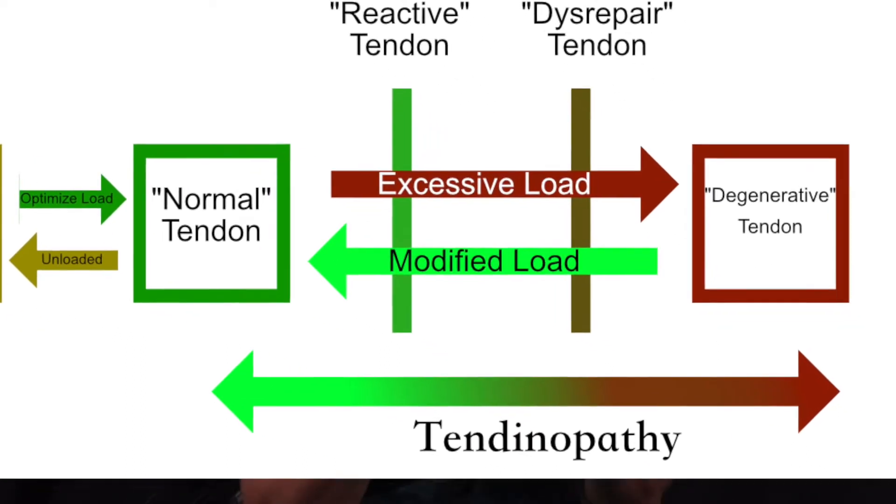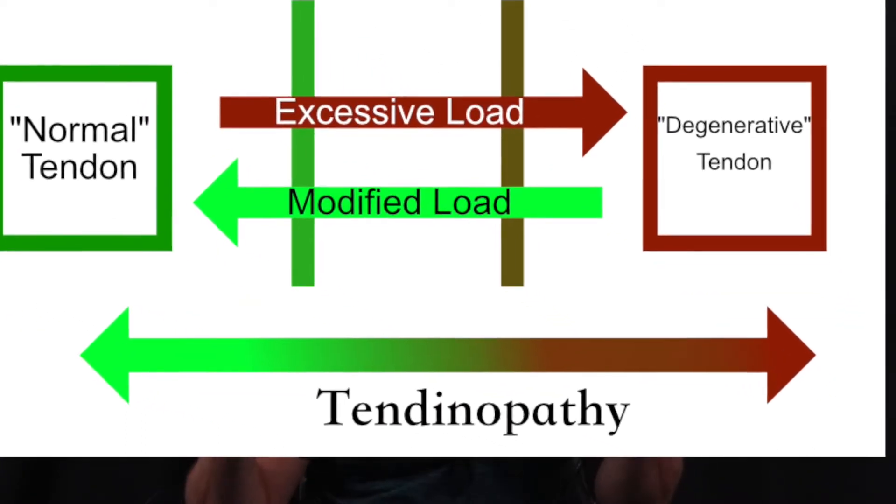What is tendinopathy? A tendon connects a muscle to a bone to allow a joint to move. It wasn't long ago that we used tendinitis and tendinosis, which simply meant active inflammation of the tendon or a degenerative state of the tendon. Today, we know that model is incorrect, so we now use tendinopathy, as we know the health of a tendon is along a spectrum.